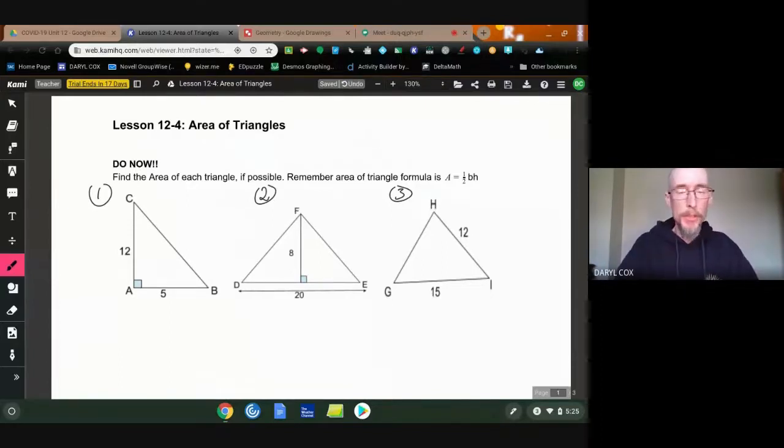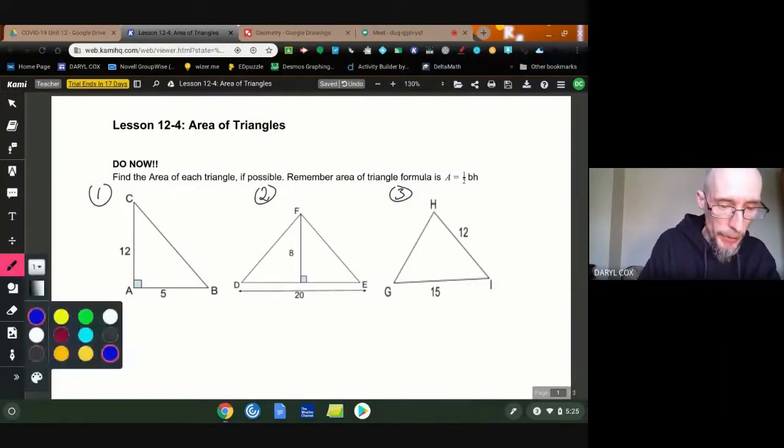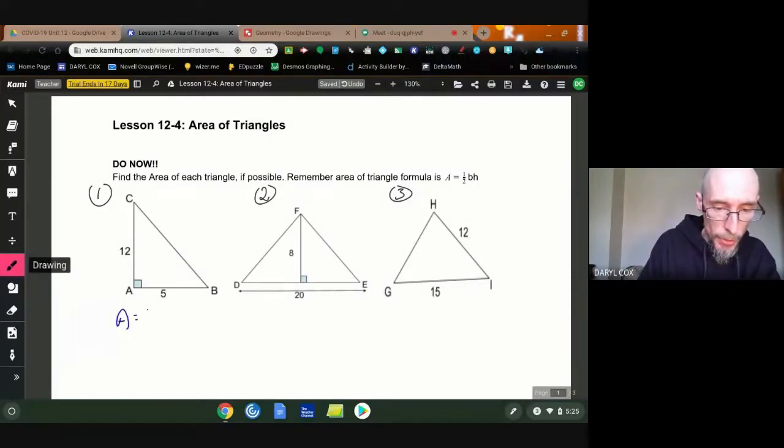So it shouldn't have been too difficult. The first triangle, very simple for an area. So my area equals half. My base is five. My height is twelve. So that ends up being half of twelve is six. Six times five is thirty. That was easy.